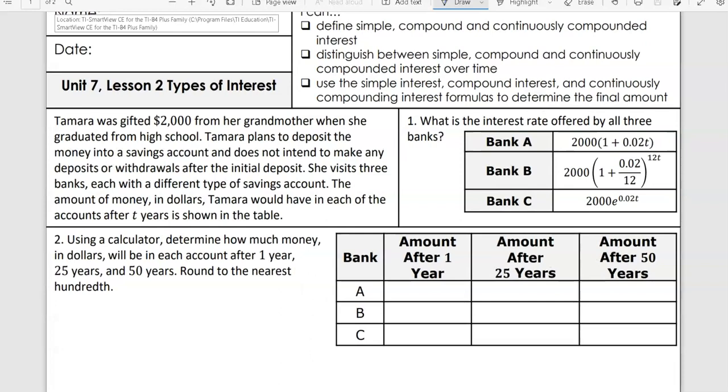Tamara was gifted $2,000 from her grandmother when she graduated from high school. Tamara plans to deposit the money into a savings account and does not intend to make any deposits or withdrawals after the initial deposit. She visits three banks, each with a different type of savings account. The amounts of money in each account after T years is shown in the table. Bank A has $2,000 times 1 plus 0.02T. Bank B has $2,000 times 1 plus 0.02 over 12 raised to the 12T. Bank C is $2,000 times E raised to 0.02T.